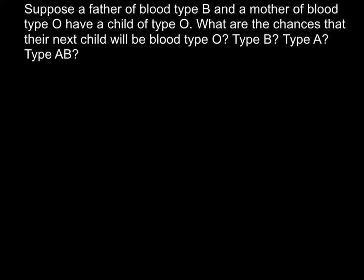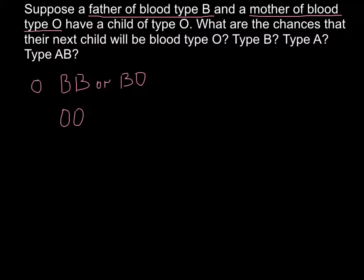As we're told in this problem, we have a father who is blood type B and a mother who is blood type O. This gives us three possible genotypes. For the father, in order to have blood type B, he can be genotype BB or BO. For the mother to be blood type O, she can only be OO. So this is male and this is female genotype.